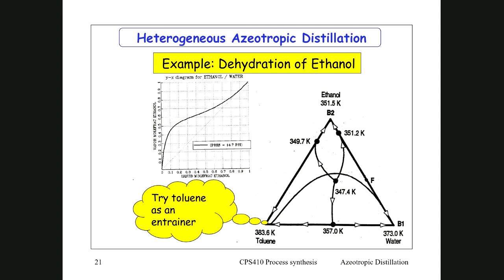A tie line might go from one side of the two-phase envelope to the other. On the organic phase you have one ternary composition, and on the aqueous phase you have a different ternary composition. The aqueous phase is at the bottom of the decanter because water has a higher density than toluene or ethanol. So the aqueous phase is denser than the organic phase.